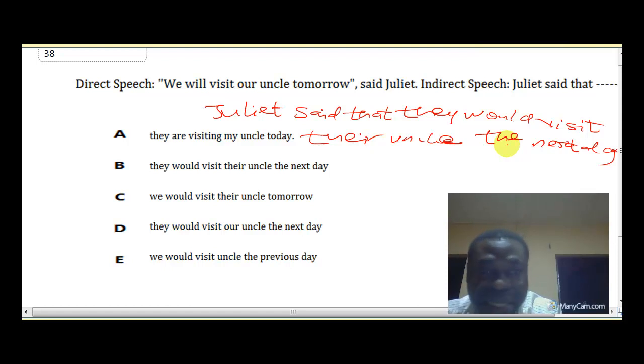C, Juliet said we would visit their uncle tomorrow. D, Juliet said they would visit our uncle the next day. E, Juliet said we would visit uncle the previous day. So which of the options is the same as the one written on the board here? It is option B. Juliet said that they would visit their uncle the next day. That's option B.